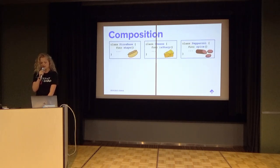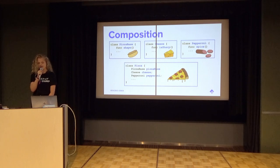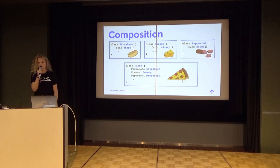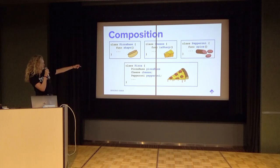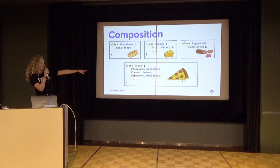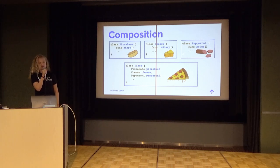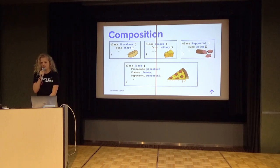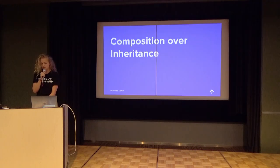We can combine these three using composition. So instead of inheriting them and automatically getting all of those functions, the pizza has variables — it has a pizza base, it has cheese, and it has pepperoni. If you want to find out if the pepperoni is spicy, you look up the pepperoni and ask the pepperoni class. That's just a quick background on what they are.